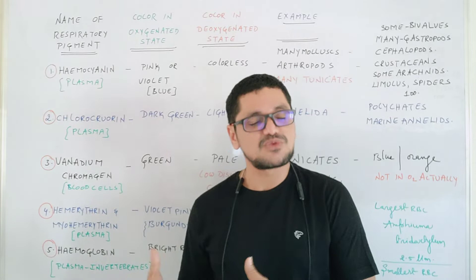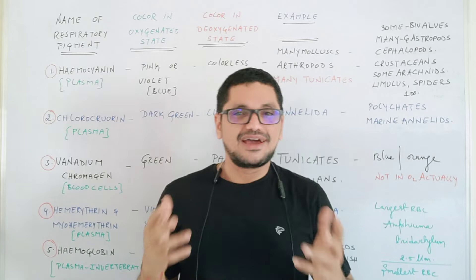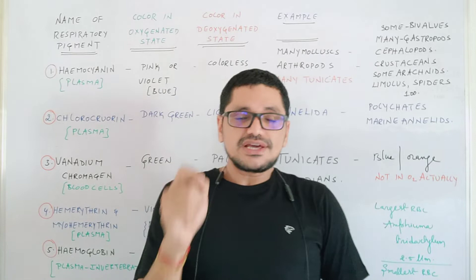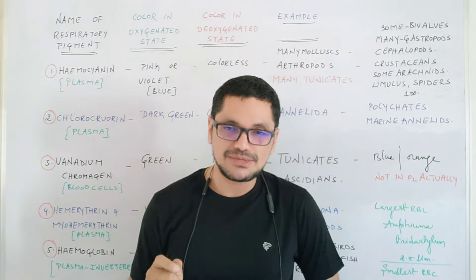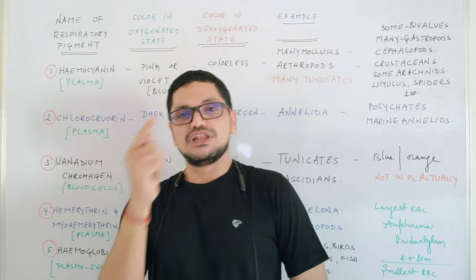Another important reason for the coloration of the respiratory pigment is whether the respiratory pigment is present in an oxygenated state or a deoxygenated state. This is also another important parameter, because generally the respiratory pigment will be one color in oxygenated state and a different color in deoxygenated state.